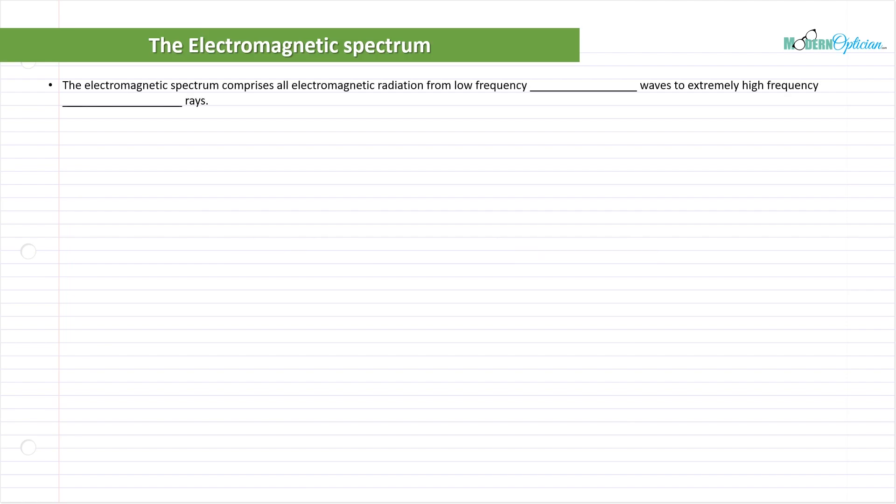So first of all, the electromagnetic spectrum comprises all electromagnetic radiation from low-frequency radio waves to extremely high-frequency gamma rays. I want you to think of this concept of the EMR, electromagnetic radiation, or the EMS, electromagnetic spectrum.